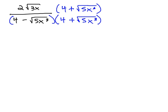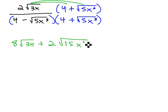As we multiply these together, we just have to distribute the numerator through. 4 times 2 is 8, square root of 3x, plus the 2 outside the radical, square root of 3 times 5 is 15, x to the 4th.